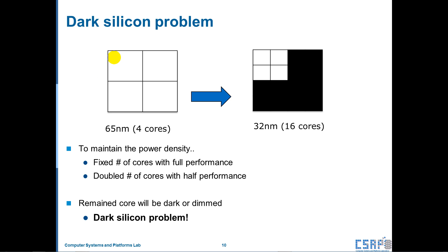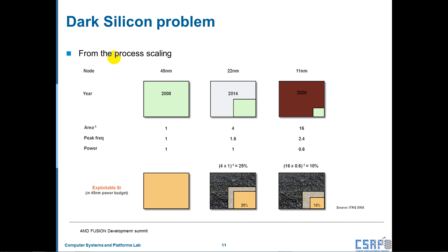To maintain the power density, we must fix the number of cores with full performance, or double the number of cores with half performance. You can see this color. White color is full-powered, and dark color is just turned off. After that, the remaining cores will be dark or dimmed. This is called dark silicon phenomena. While we scale the processor, the dark region will be grown up, due to the limitation of Dennard scaling.